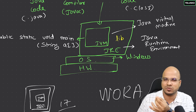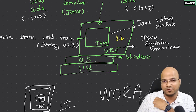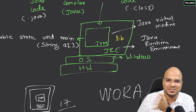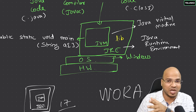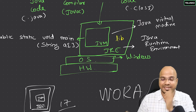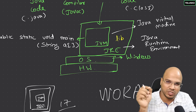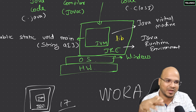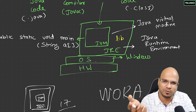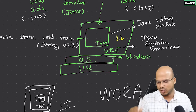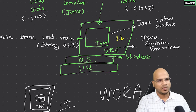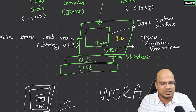JDK 17 is LTS, which stands for long-term support. Every new version brings some minor extra features. Even if you are watching this years from now, the base concepts remain the same. For example, System.out.println has been the same since Java 1, so don't worry about new updates — the core concepts will stay the same.